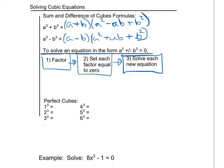Some things to keep in mind are what our perfect cubes are. You do not have to memorize these the way you had to memorize the perfect squares, but they are good to know so you can recognize when an equation is in one of these forms. 1 cubed is 1. 2 cubed is 8. 3 cubed is 27. 4 cubed is 64. 5 cubed is 125. 6 cubed is 216.